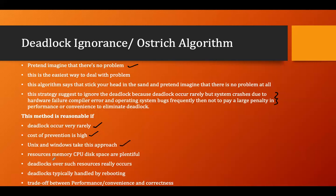Unix and Windows take this approach. If resources — memory, CPU, disk space — are plentiful, then we take this particular approach. Deadlock over such resources rarely occurs. Deadlock is typically handled by rebooting — the deadlock will be handled by a reboot, so we don't have to use any specific algorithm. There is also a trade-off between performance, convenience, and correctness. Nowadays, Unix and Windows operating systems have no deadlock prevention or avoidance algorithm.